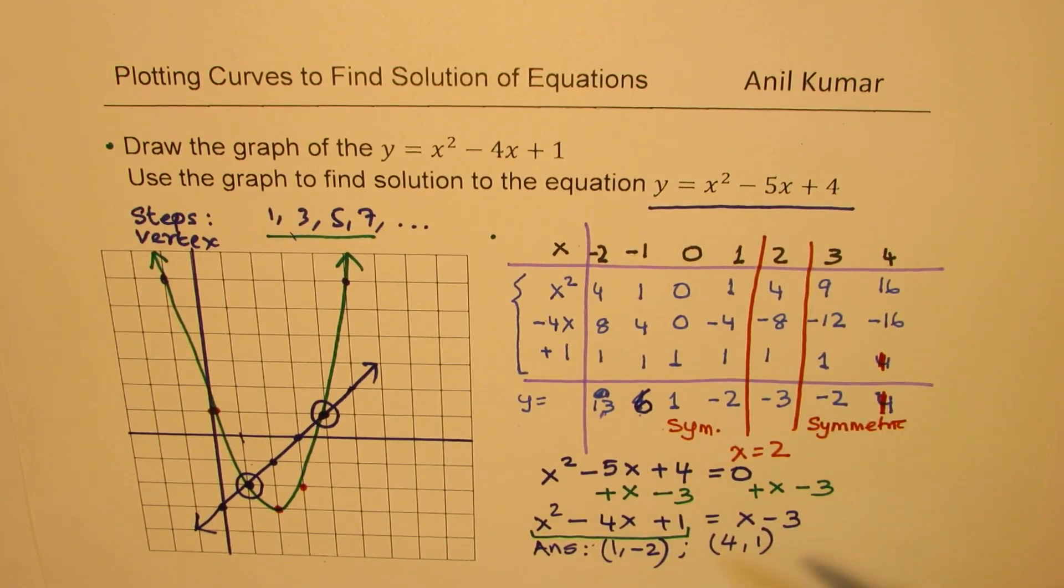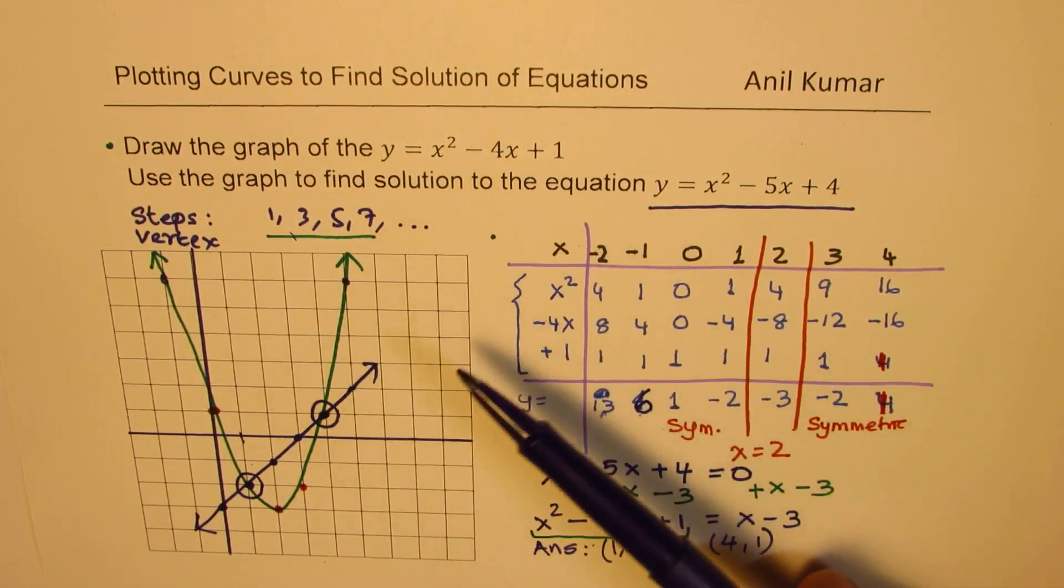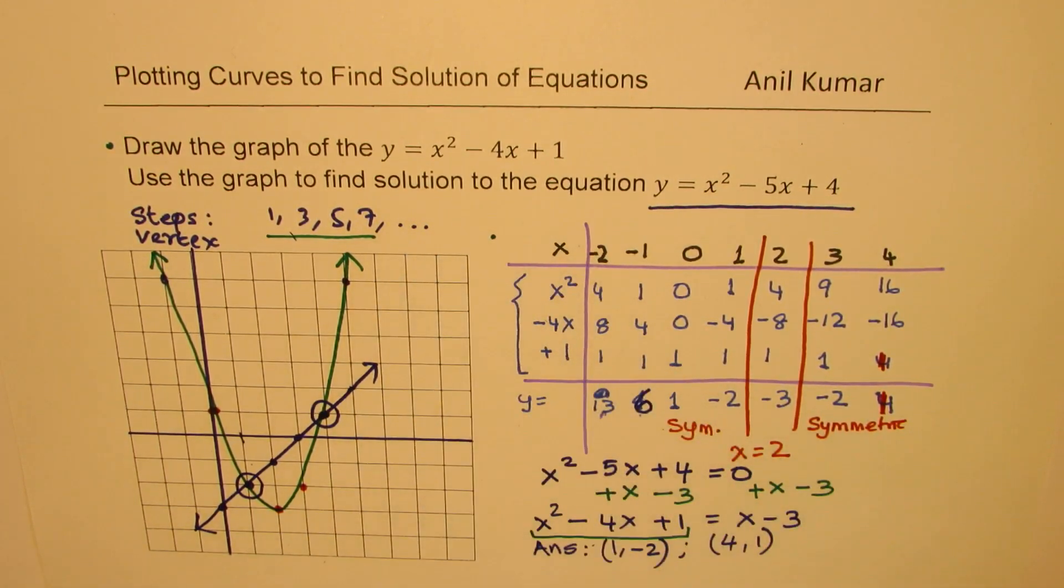So in this particular video, you learn a technique of solving quadratic equations, graphing one, and then writing the other as equivalent on one side and then something else on the other side. And that something else when drawn, if you have a point of intersection, that will be the solution. So I hope that makes sense.